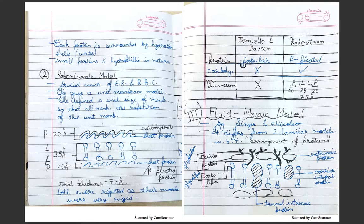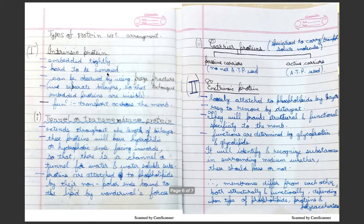There are carbohydrates and extrinsic proteins. Carbohydrate and protein together are called glycoprotein, and the carbohydrate which touches the lipid, both together combined, are called glycolipid. Types of protein with respect to arrangement are as follows: intrinsic and extrinsic.